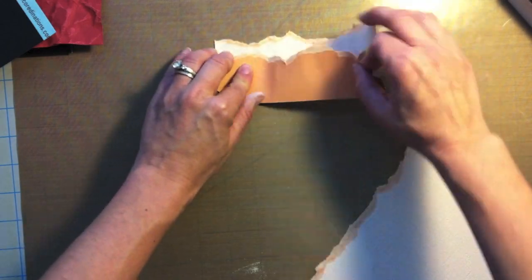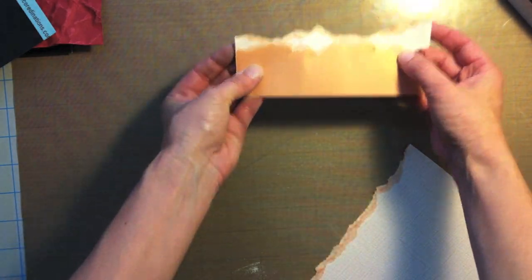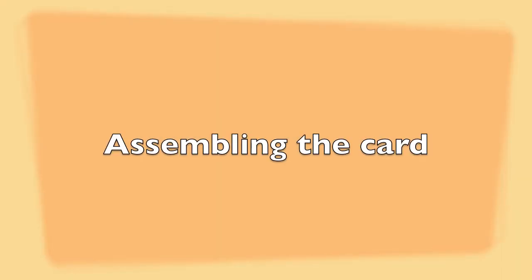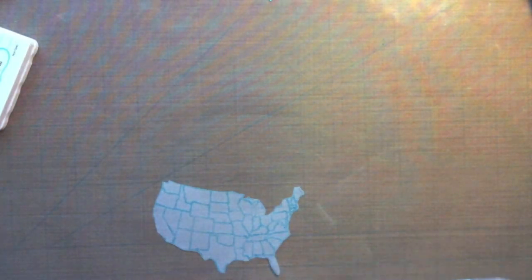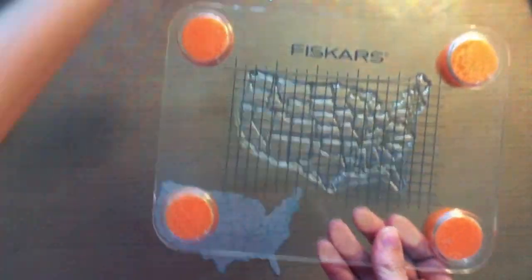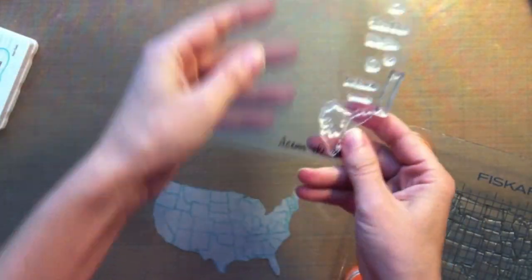If you want to add some more dimension to it, just tear it again and use that opposing side and you can create something really pretty. Now here we are assembling the card and I'm going to be using the Sweet Stamp Shop Across The Miles card. I'm sorry I did some of this off camera, I thought I was filming but evidently I wasn't.